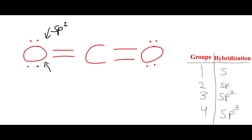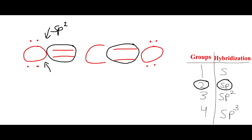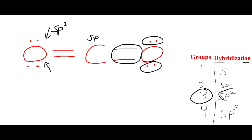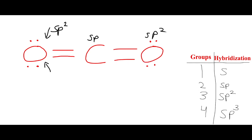Now, this middle carbon — how many bonds is it connected to? Carbon can only have four bonds in total, so there are two right here and two right here, but each counts as one group. So it's two groups, meaning this is SP hybridization orbital. Finally, for the last oxygen, it's connected to one, two, three bonds — three groups — which is SP2.